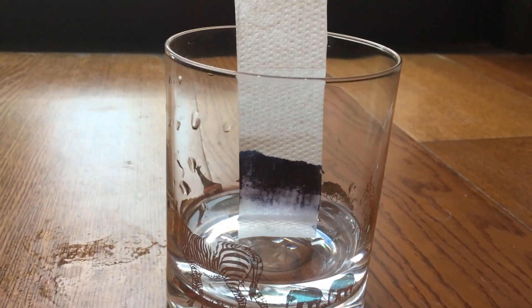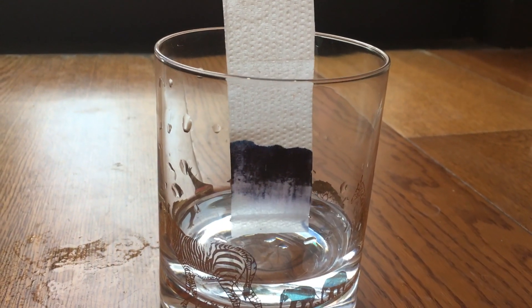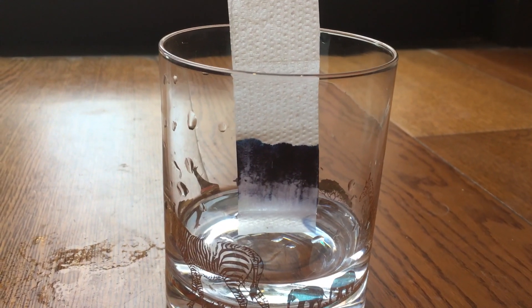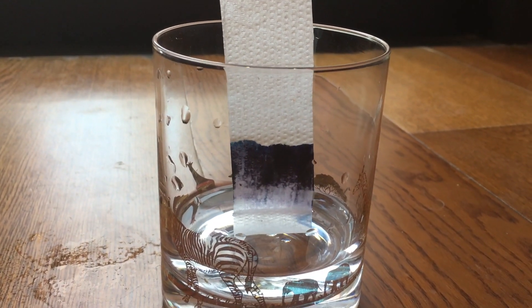In this experiment, we are using black ink as a chemical mixture and trying to separate it into different constituent colors. It happens because of the difference in the properties of the colors present in the black ink.